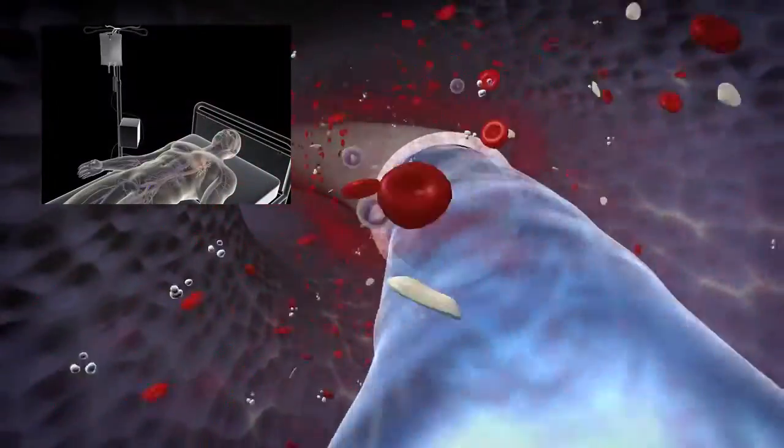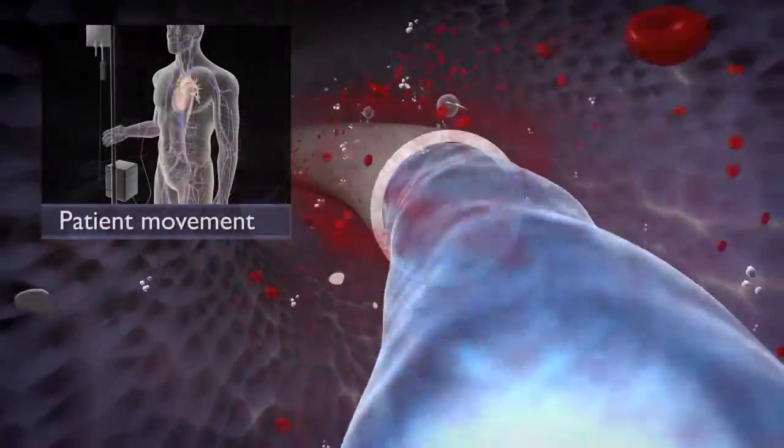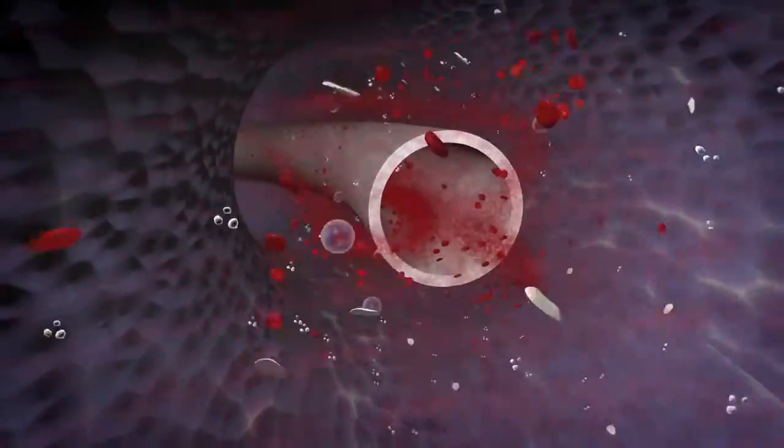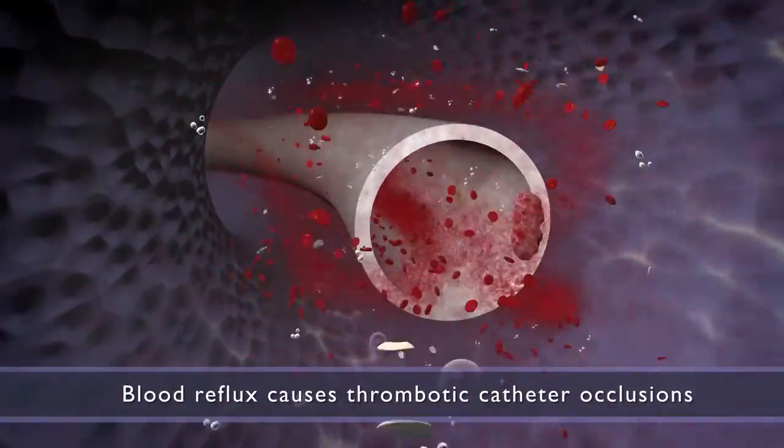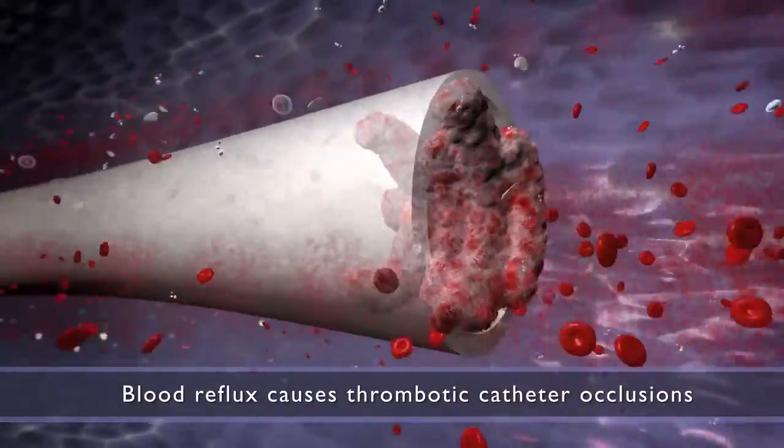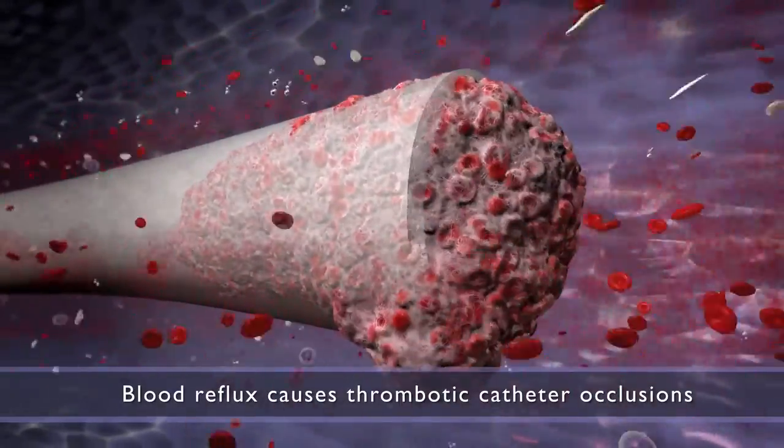Vascular pressure may increase in response to mechanical changes such as patient movement. This leads to blood reflux into the catheter. Blood reflux, or the uncontrolled backflow of blood into the catheter lumen, is a leading cause of intraluminal thrombotic catheter occlusions.